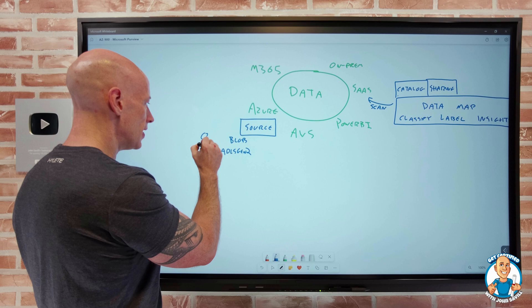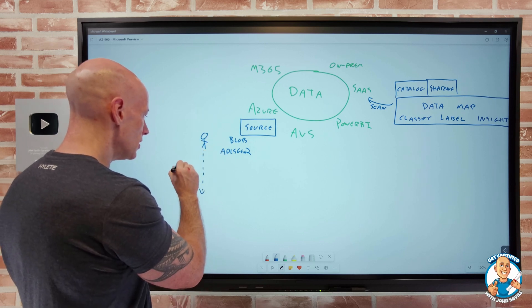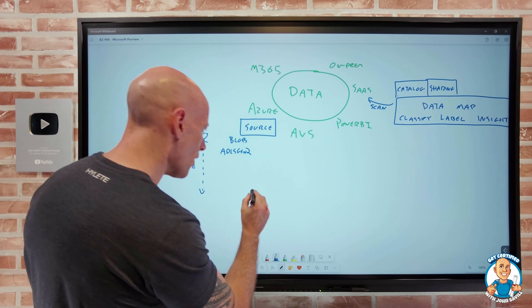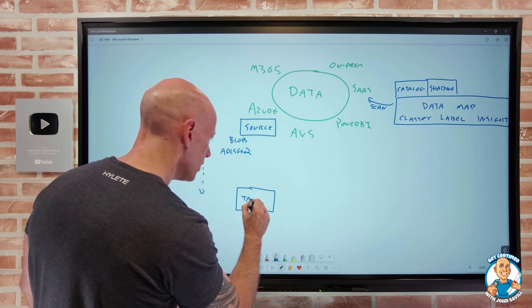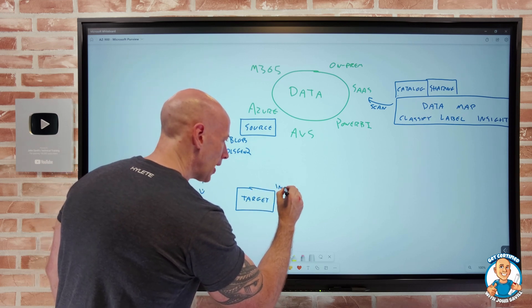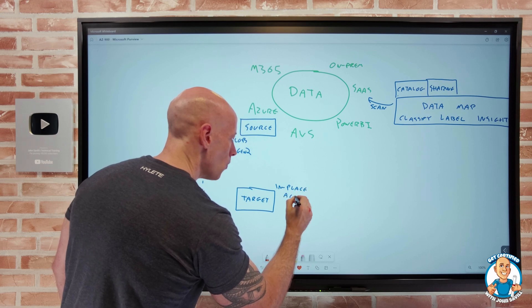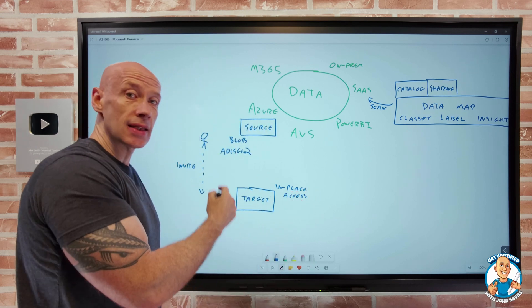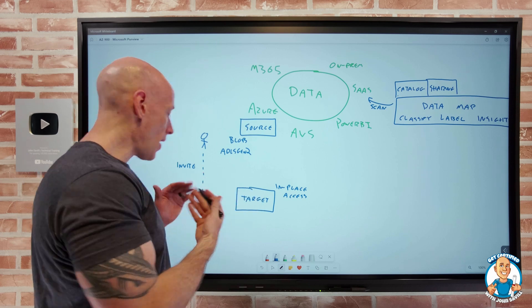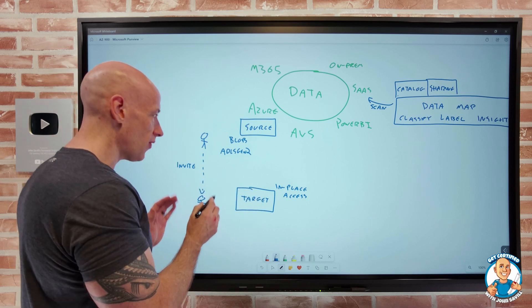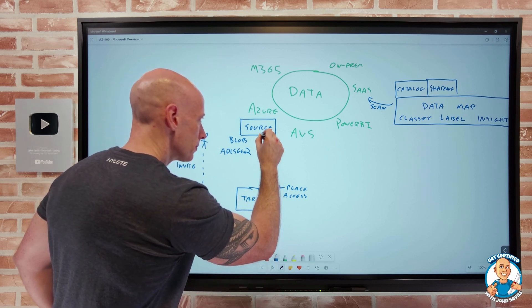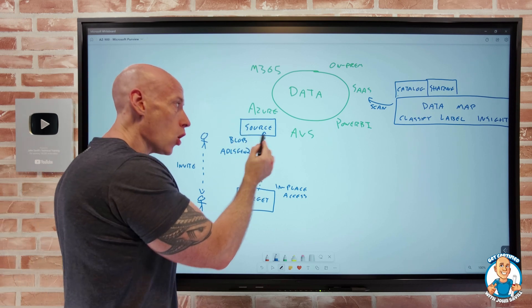And what I can do now is I can send an invitation. So if I'm sitting over here, I could send an invite to someone in another organization. And if they accept that invite, what happens is they have a target storage account. And what it does is I can do in-place access. And what that means is it's not duplicating the data. There's no replication happening. I create a new storage account in my, as the target, the person that's having the invite to view this data. And when I look at it, I will see the content, but the data only resides in here.